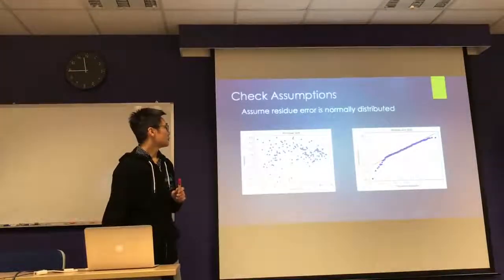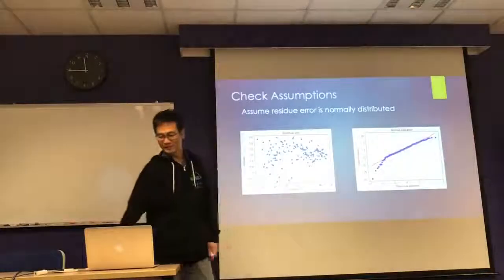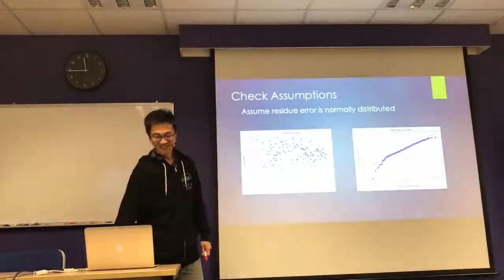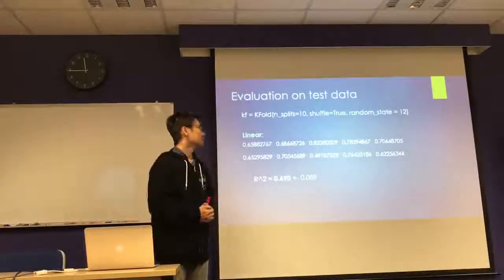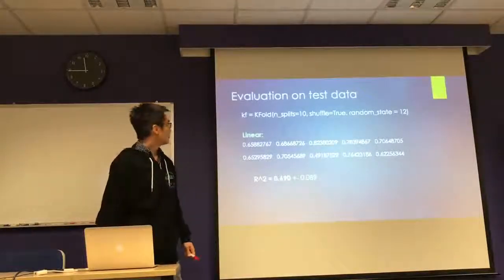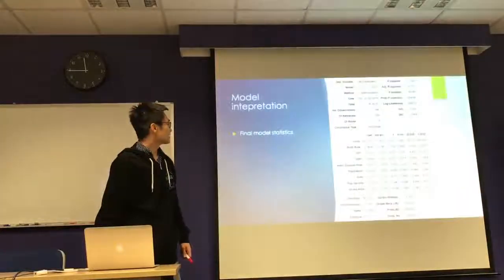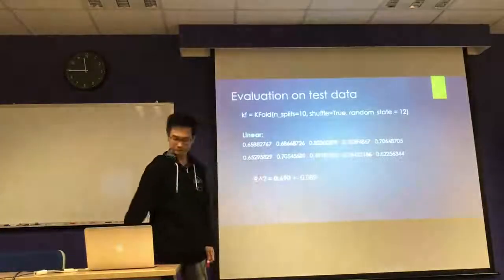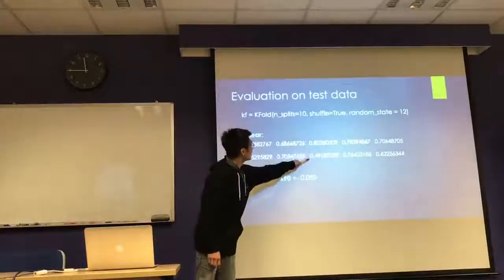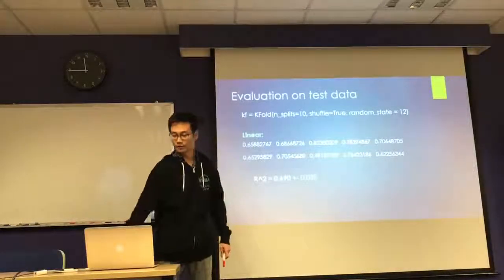I checked the assumptions and looked at the residual plot — they could be better. I then tested on the test data and ran a handful of tests. The results are quite okay, though with quite large variation — between 0.49 and 0.82 — and an average of about 0.7.